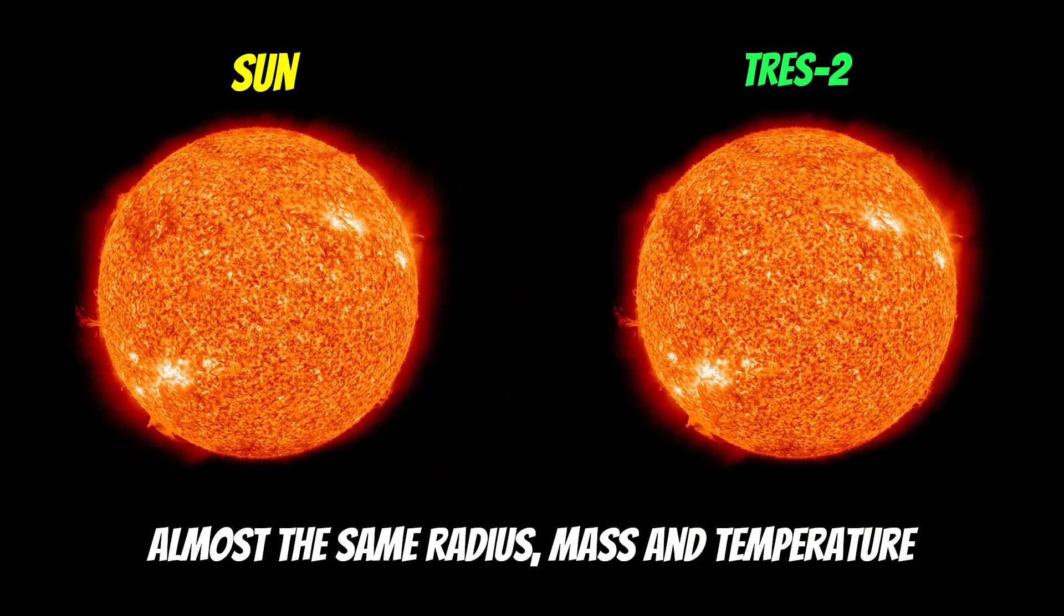When we compare the star that it orbits, TRES-2 is the actual star it's orbiting, it's almost identical to the Sun. It has almost the same radius, same mass, same temperature, give or take a little bit. So it's almost the same as the Sun. We can think of it as a Sun-like star.